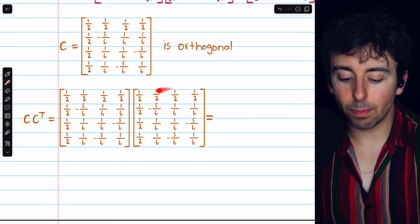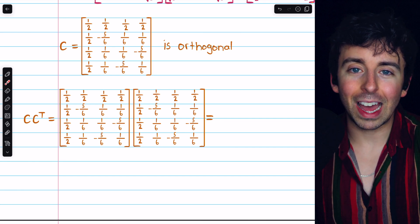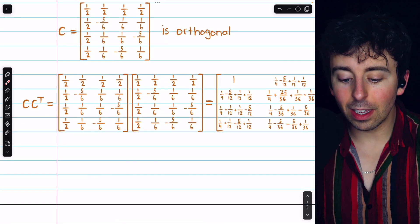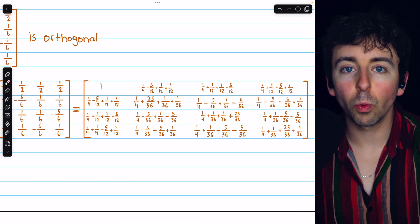Multiplying this by this, we'll find that we do get the identity, although it is rather messy. You can try doing the multiplication yourself, and here are the computations if you would like to check your work.